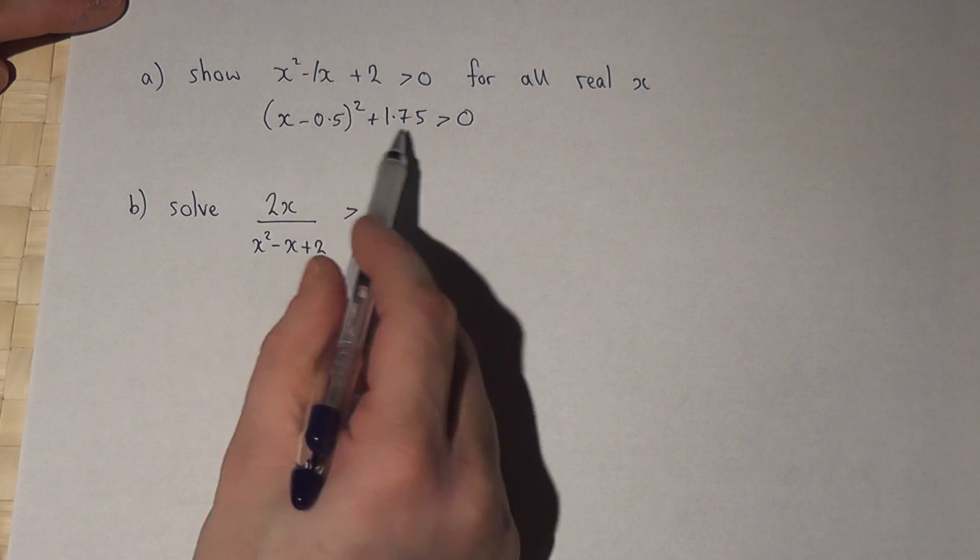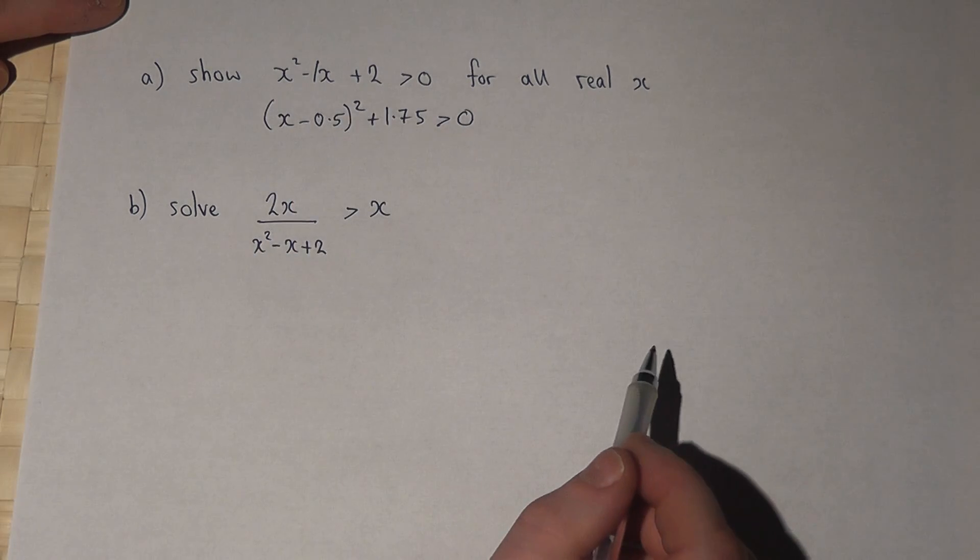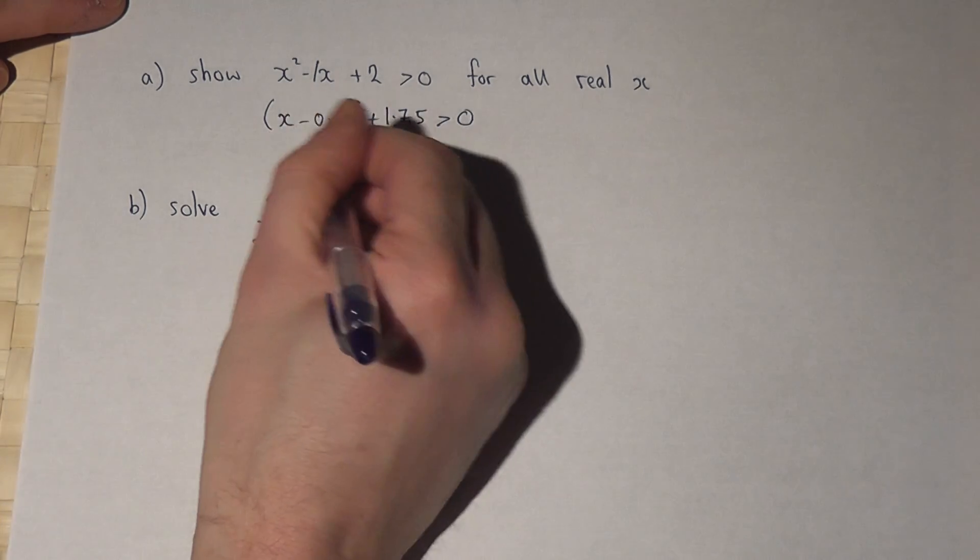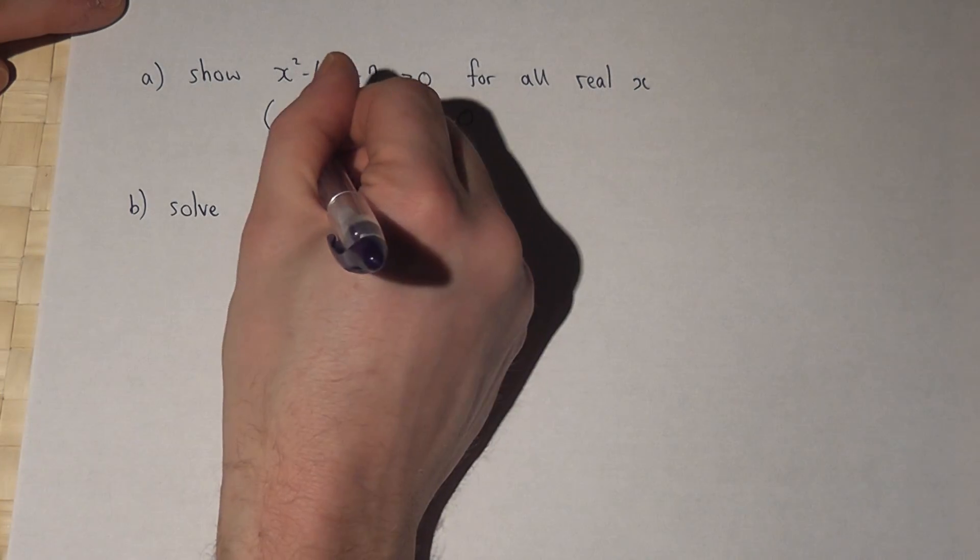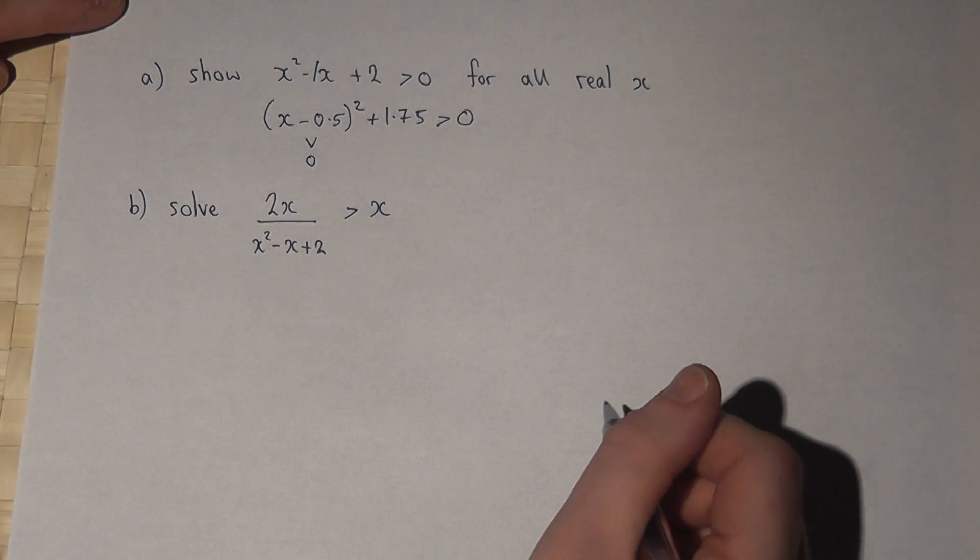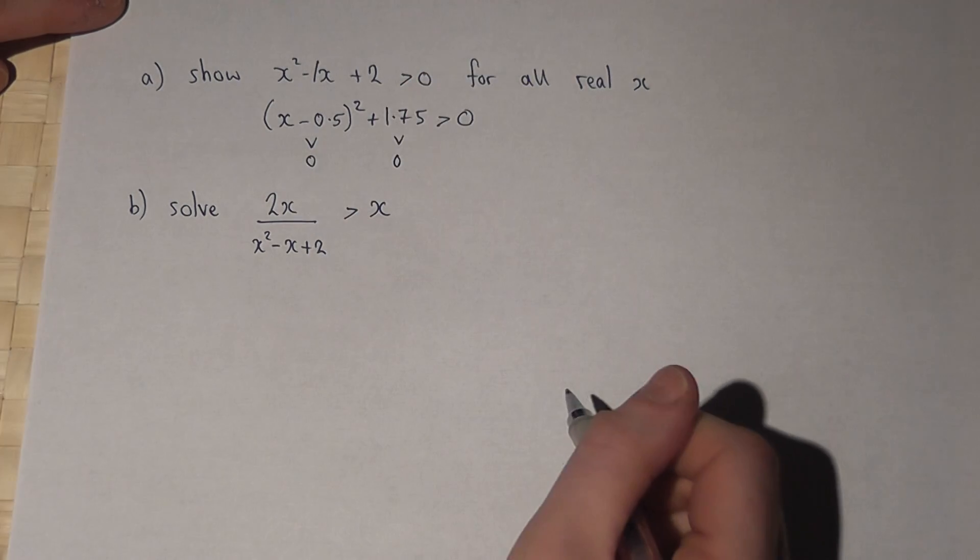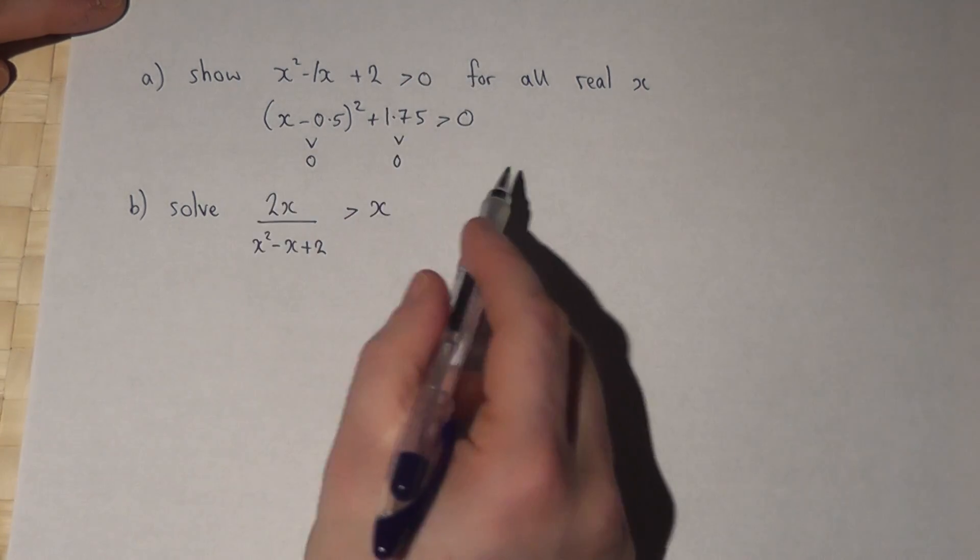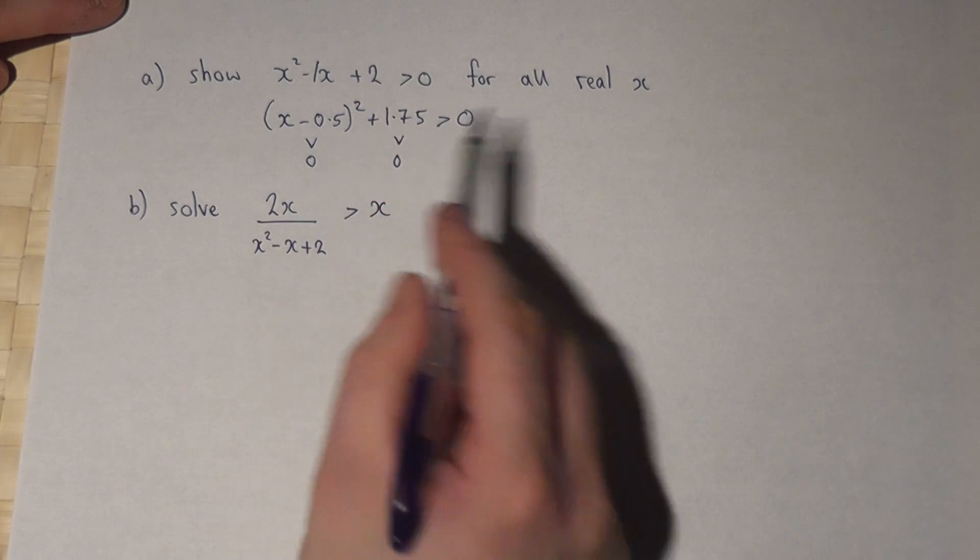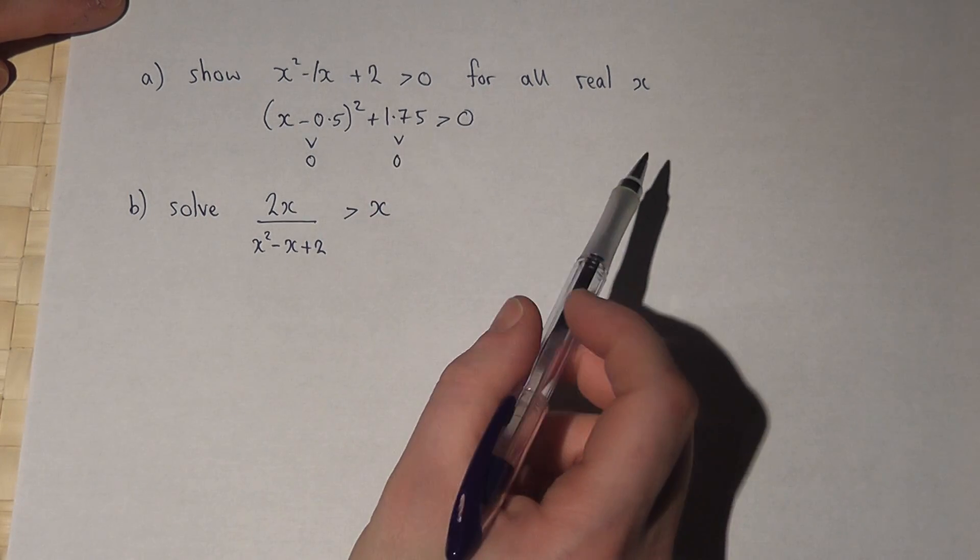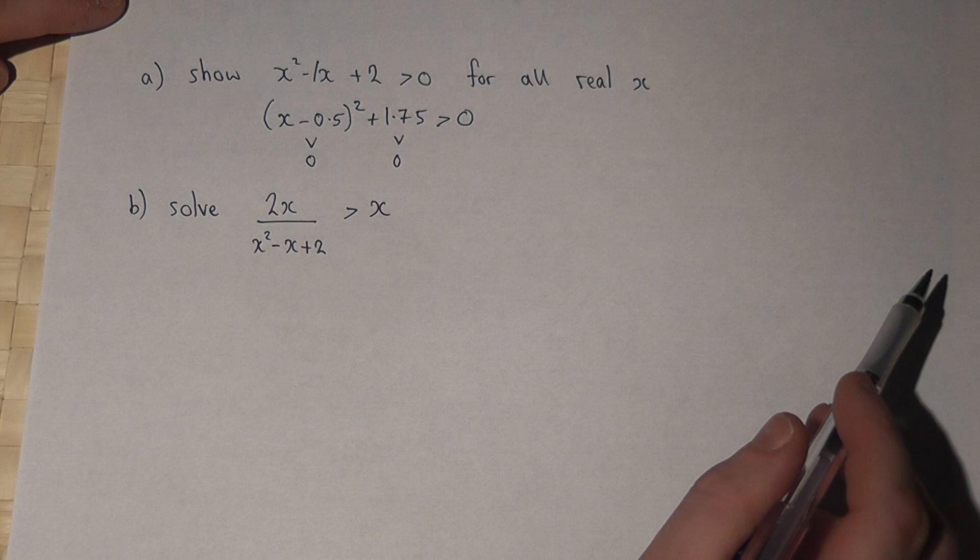So if I expand this, they're the same inequality. However, this part here is a square, so that's always greater than 0. And 1.75 is also always greater than 0. So therefore, the overall answer itself must be greater than 0. So therefore, I've shown the required result.